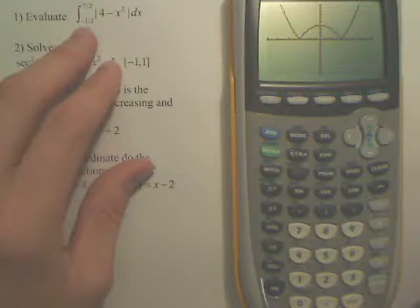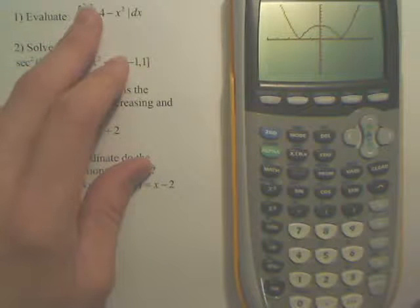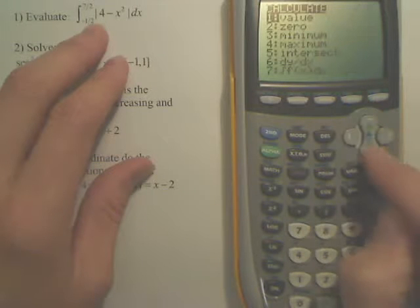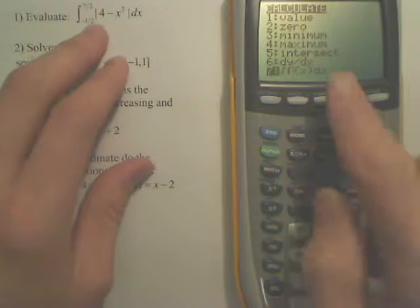Now we want the interval from negative 1 half to 7 over 2. We want to integrate that. So all you do is you hit the second trace, and you go down to number 7, the integral.